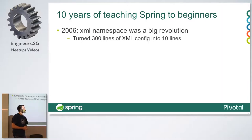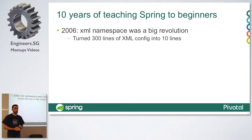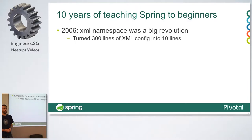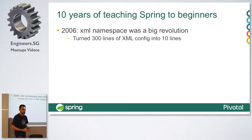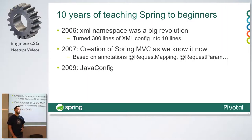We come from a long time ago. Spring's first milestone came out back in 2004. In 2006, we had a really nice improvement on the XML configuration — namespaces were added, which simplified things quite a lot. But XML is still quite verbose, error-prone, and not type-safe.